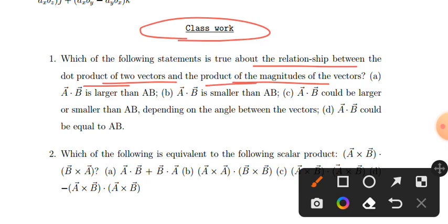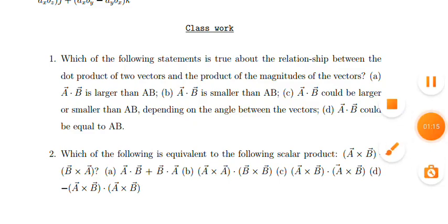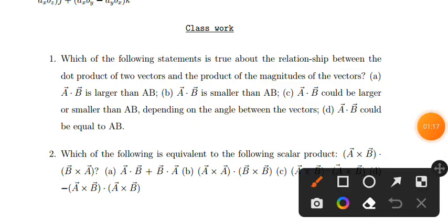Looking at the options: A·B is larger than AB; A·B is smaller than AB; A·B could be larger or smaller than AB depending on the angle between the vectors; A·B could be equal to AB. The question is about the relationship between dot product and the magnitude of two vectors.